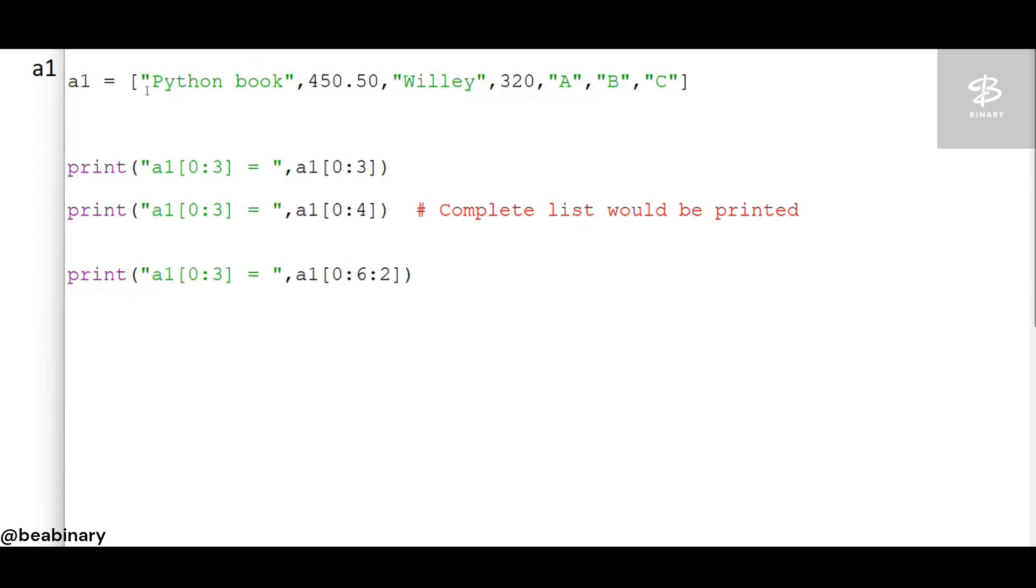What I am doing: zero first, zero would be printed, then this means skip two positions. So after python book, 450 would be skipped and willy would be printed. After willy, 320 gets skipped and a would be printed.